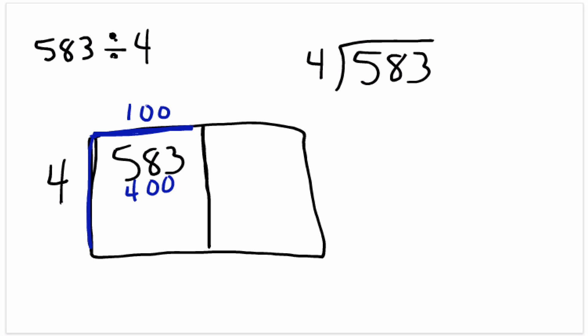That means the area of this rectangle right here is 400, and so we subtract and we get 183 units of area left over. So that means this blue area right here has an area of 400, and that leaves us with 183 units of area left over.